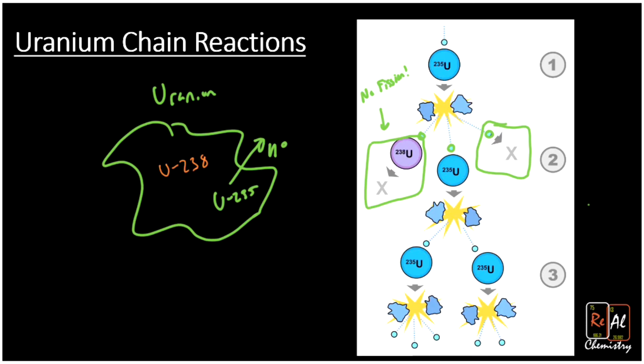The last and most interesting option is it runs into another U-235. That will result in another fission reaction. Notice what happens: I had one chain reaction that led to some neutrons, and now I release even more neutrons. Each step of this reaction releases more and more neutrons.